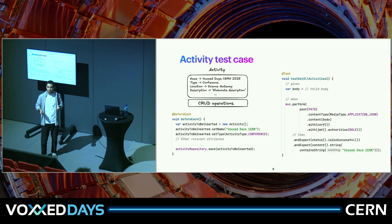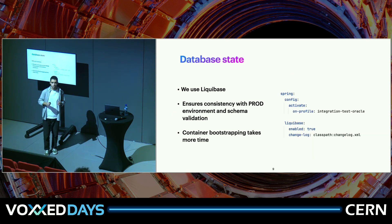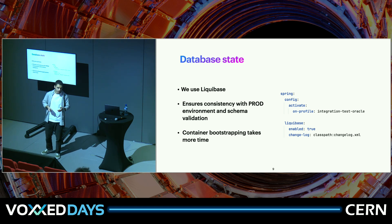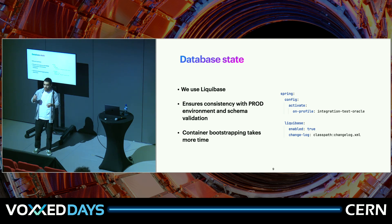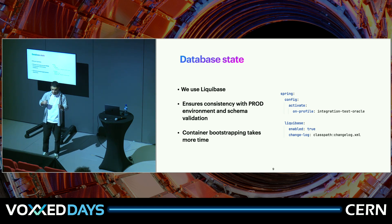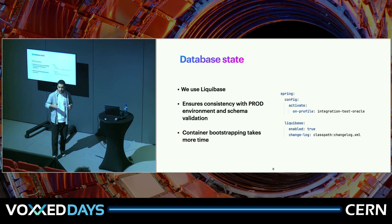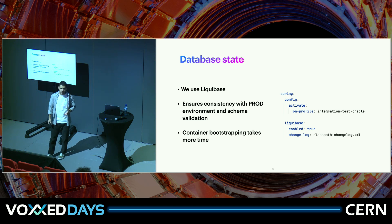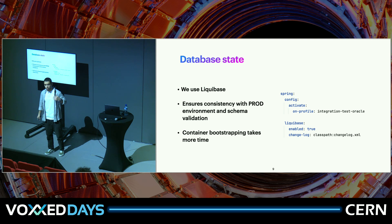If we run this test, it will fail because the database is completely clean — there are no tables, nothing. There are a couple of ways to address this: we could create an initialization script, use a JPA flag to generate schema, or, since this was a brand new application with full database version control via Liquibase, we decided to use Liquibase to apply all our change sets and run tests directly on top.